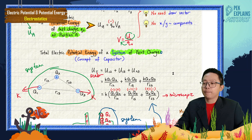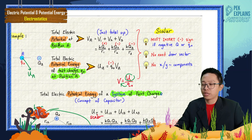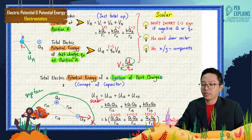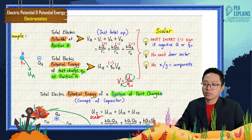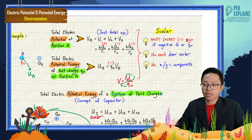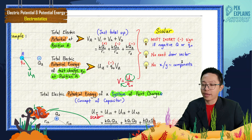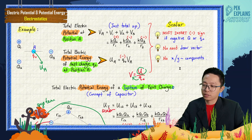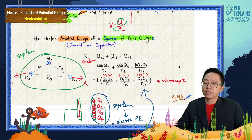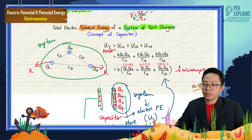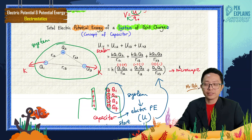So that is how to find total potential and total potential energy — for one charge and for a system of charges. Remember: both potential and potential energy are scalar quantities. You must include negative signs for negative charges, and you just total up — no need to find vectors, no vector diagrams, no arrows, and no XY components. Stay tuned for the work done topic. Bye bye.